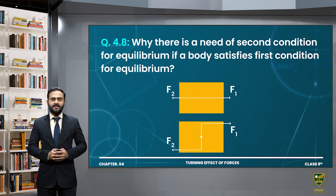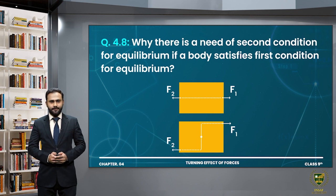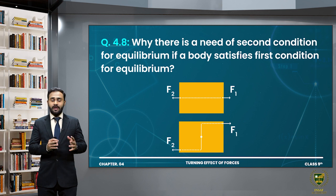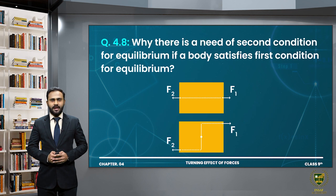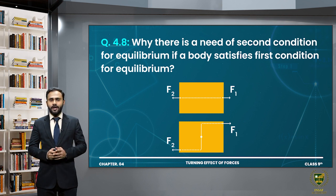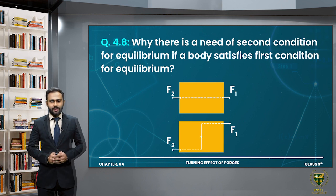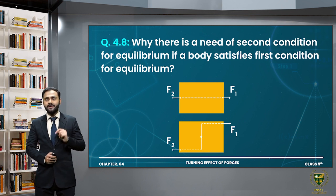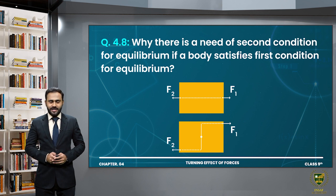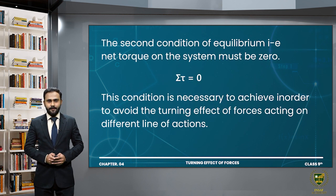Question 4.8: Why is there a need for the second condition of equilibrium if a body satisfies the first condition? If forces act on a body such that their sum is zero — meaning the first condition is satisfied — but the forces cause the body to rotate, then a turning effect is produced. That is why there is a need for the second condition of equilibrium: the sum of all torques acting on the body must be zero.